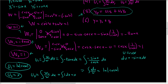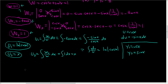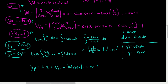Step 5: write down yp. It's u1·y1 plus u2·y2. y1 is cos(x) and y2 is sin(x). So yp equals ln|cos(x)|·cos(x) plus x·sin(x). This is our particular solution yp.